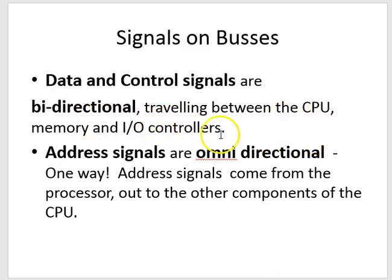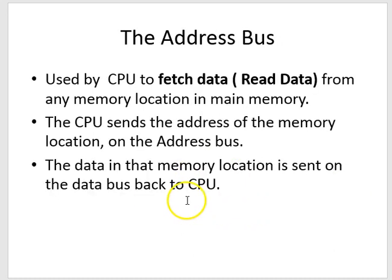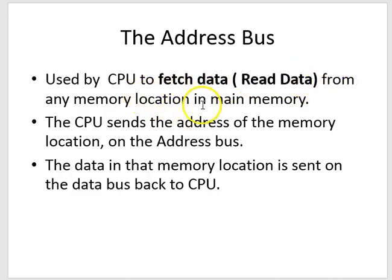The data and control signals travel two ways between the CPU, memory, and controllers, while the address signals are uni-directional — one way, coming from the processor out to the other components. Now, the address bus is used by the CPU to fetch or read data from any memory location in main memory. The CPU sends the address of the memory location onto the address bus.